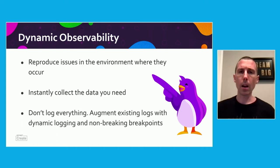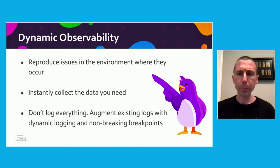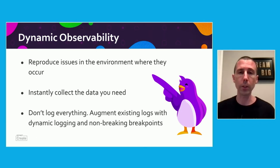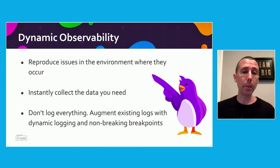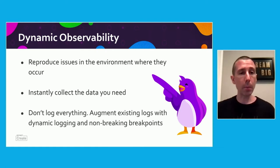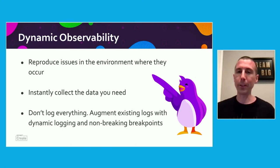I wanted to bring up this category of dynamic observability tools. Being able to reproduce and get to the bottom of issues in the environment where they occur is incredibly important. You need to get to the data flowing within your application at the level of your code anytime you need it. Rather than having to log everything, you can use dynamic observability tools to augment your existing logs, metrics, and traces and get to the data you need as you need it.